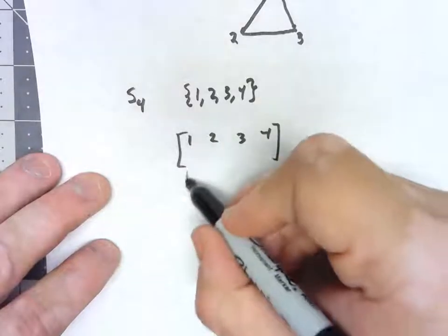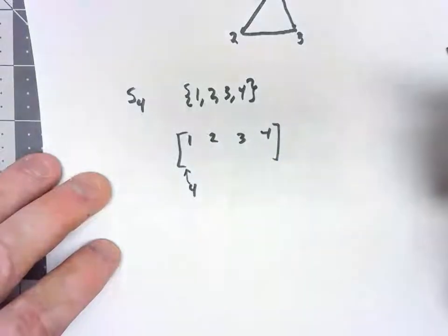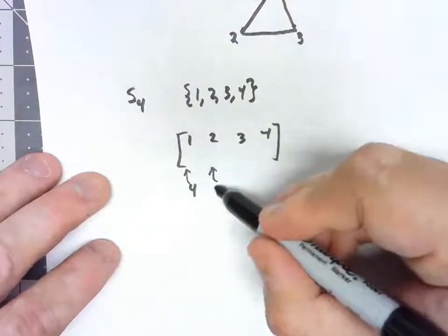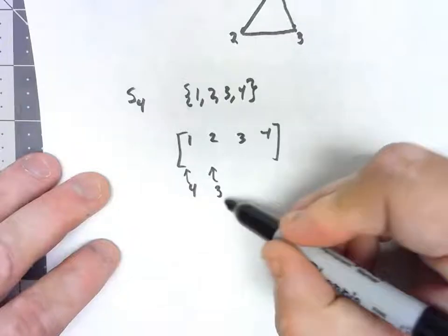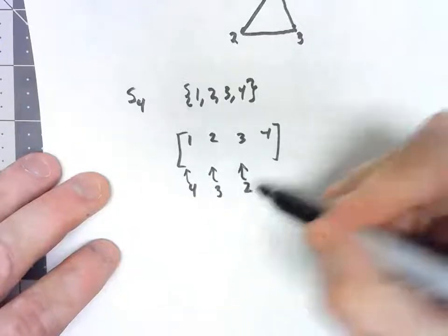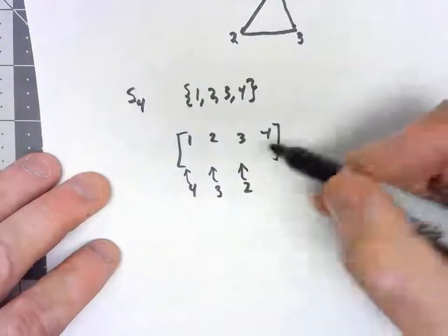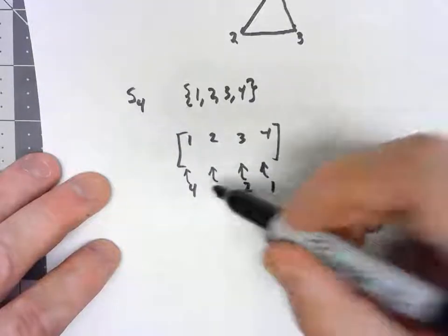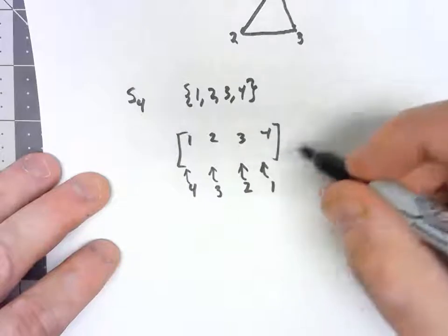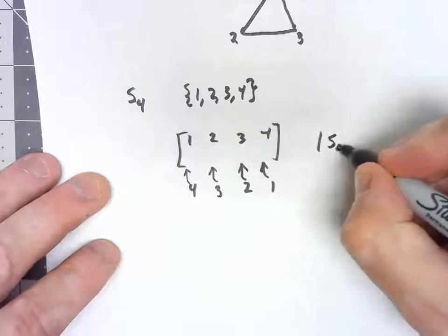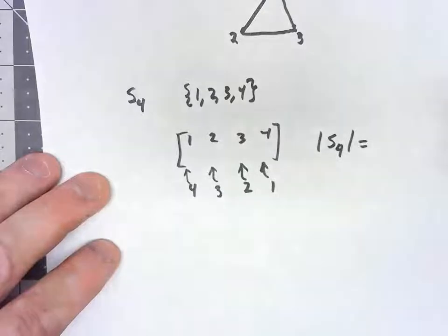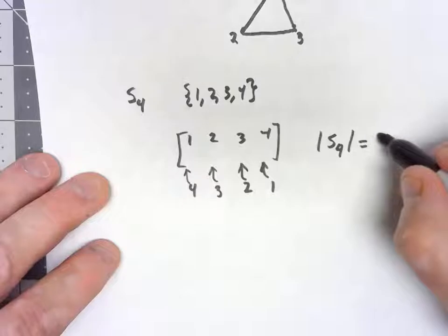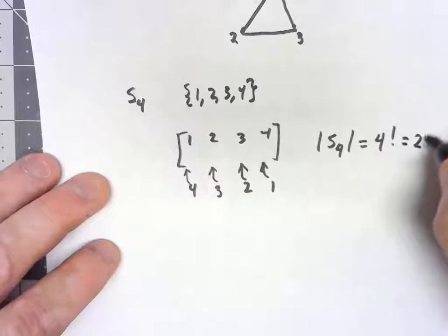Well, one could map to four different things. Once that's chosen, there's only three things left for two to map to. Once that's chosen, there's only two things left for three to map to. And then the last element has to be what four maps to. So the total number of permutations, the order of S4 has to be 4 times 3 times 2 times 1, 4 factorial, which is 24.